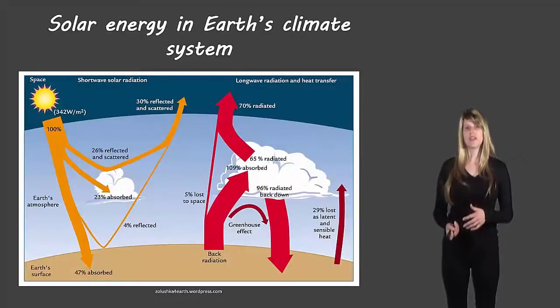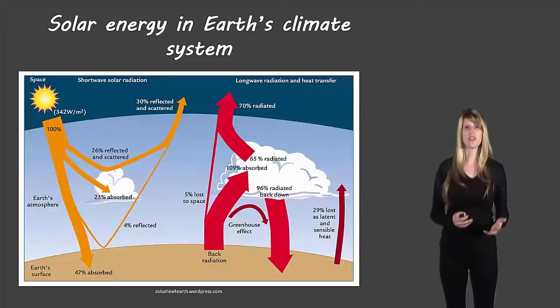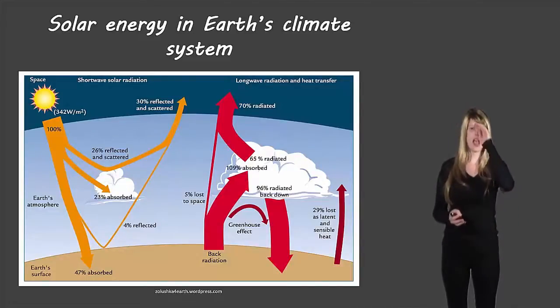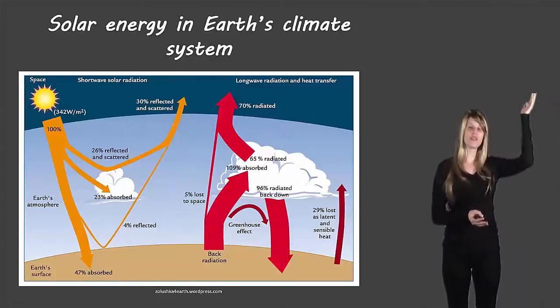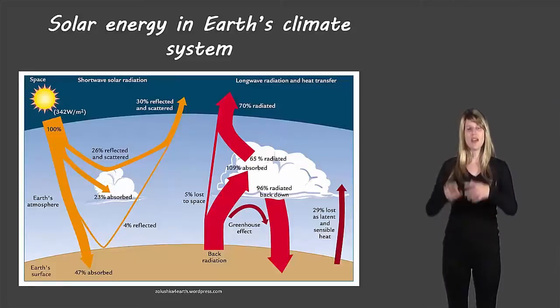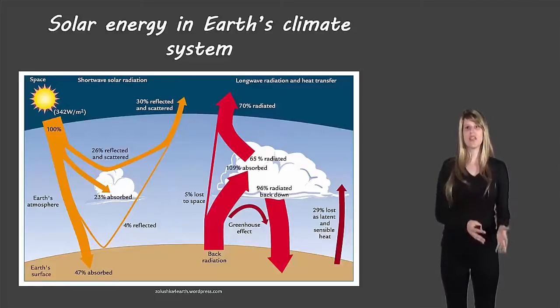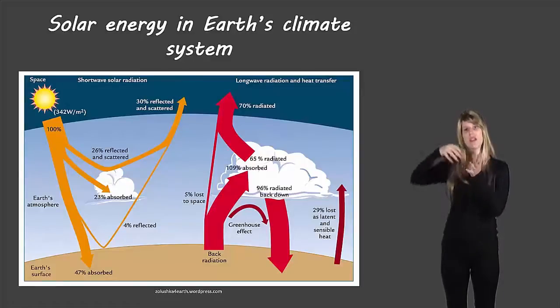When we talk about the energy from the sun and how it reaches the Earth there are a few different things that can happen. Some of that sunlight comes into the Earth and it gets absorbed by the Earth. Some of it hits the Earth and it gets reflected back out into space. Some of it comes and before it can even hit the Earth it hits some clouds and maybe it gets absorbed by them or sometimes it will get reflected by them.